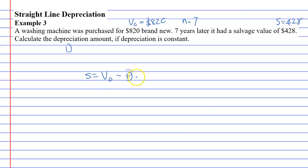S equals V₀ minus D times n. Our salvage value was 428, our original value was 820. We don't know what our depreciation value is, but we know that we multiply it by 7.